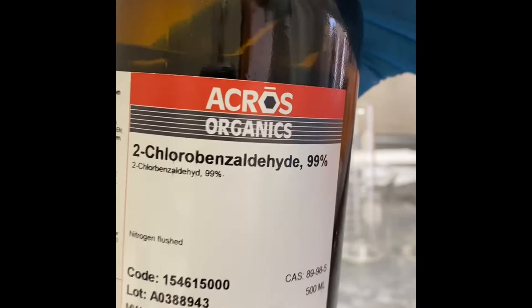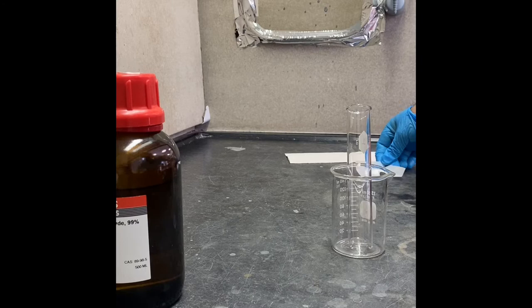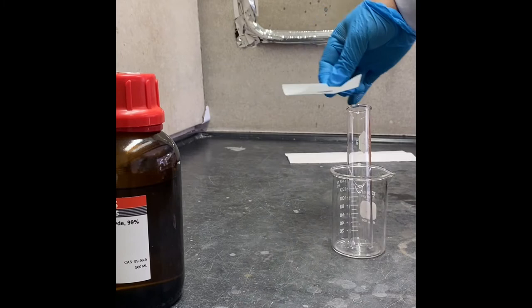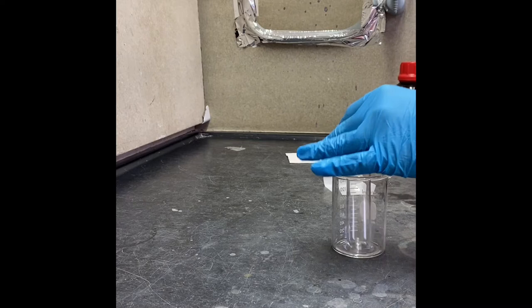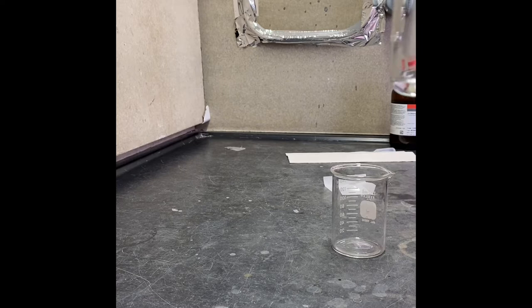We're going to do the Cannizzaro reaction today. We're going to use 2-chlorobenzyl diethyl ether and potassium hydroxide crushed. I will use 2 milliliters of 2-chlorobenzyl diethyl ether and I'm transferring that to my reaction flask.